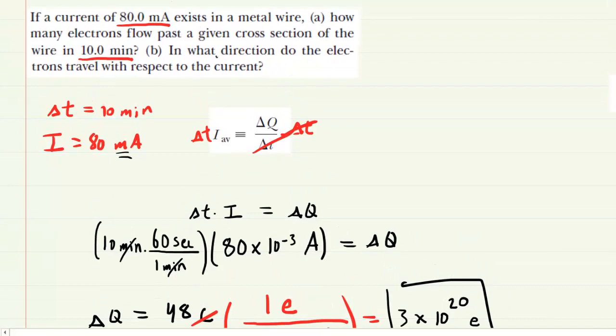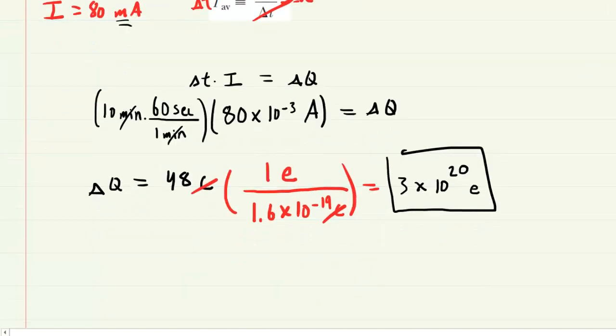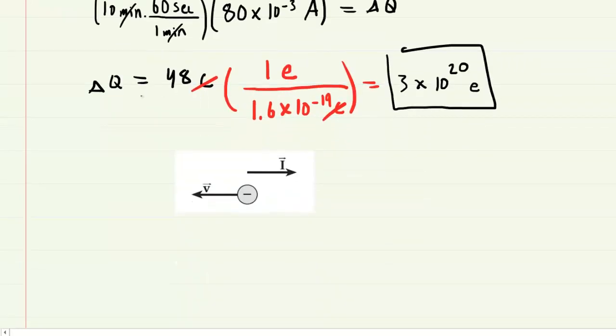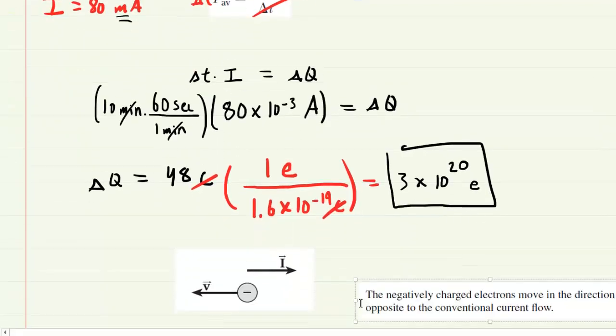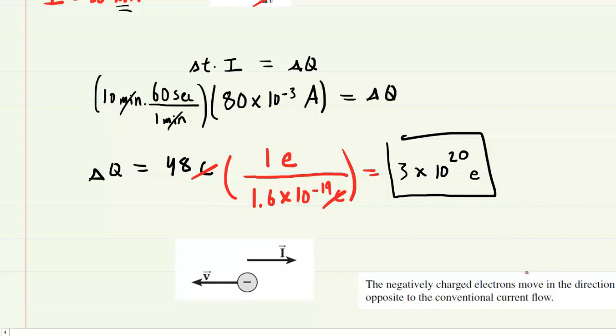In part B, we are asked in what direction do the electrons travel with respect to current? Now for historical reasons that you may want to look into in your textbook or another source, it turns out that the direction of the electron velocity and the current direction are always opposite. So we've drawn an electron with a velocity pointing to the left, and then we've drawn the current flowing in the opposite direction. This is always true that the current and the flow of electrons occur in the opposite direction. So the correct answer to part B of this question will be that the negatively charged electrons move in the direction opposite to the conventional current flow.